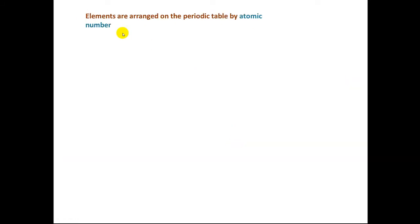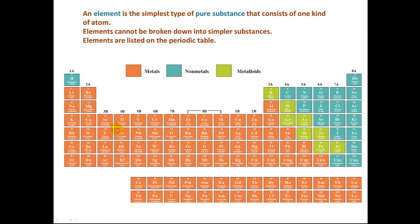Elements are arranged on the periodic table by atomic number. The atomic number is this number here, usually above the element symbol. And right here we have the element symbol. If we go back to the periodic table, we'll see that the elements are arranged by atomic number, and they increase going from left to right and from top to bottom. For example, an element that has an atomic number of 26 is right here, and it is called iron. Oxygen has an atomic number of 8, fluorine an atomic number of 9, and gold an atomic number of 79.